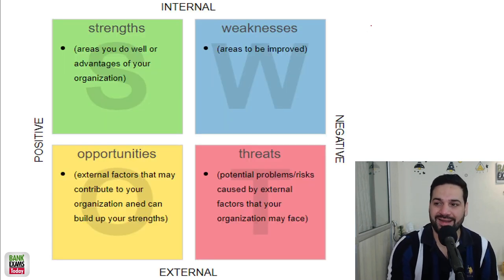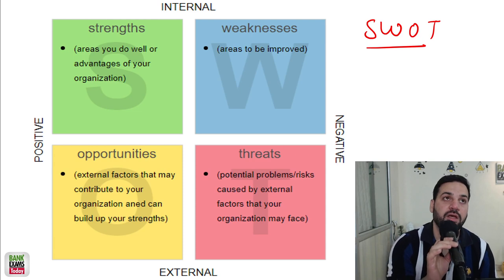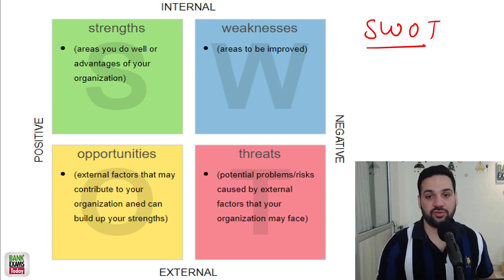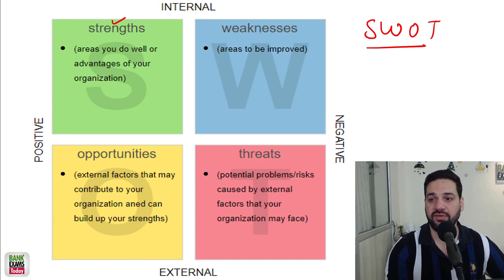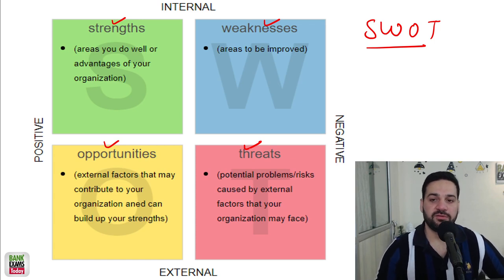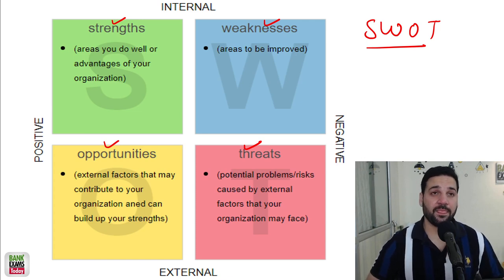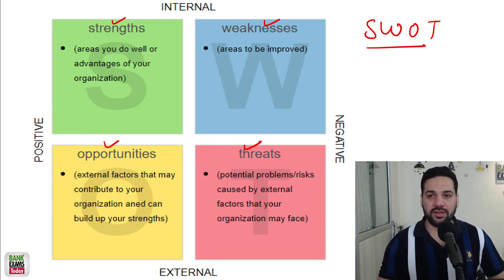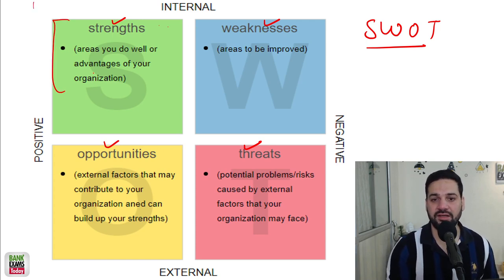First of all, SWOT analysis. What is SWOT analysis? All of you have done MBA in marketing and might have studied this topic, but many students confuse it. SWOT stands for Strengths, Weaknesses, Opportunities, and Threats. As an organization, what are the strengths and weaknesses? Strengths and weaknesses are the internal factors.